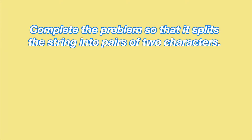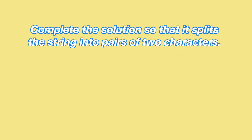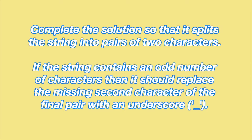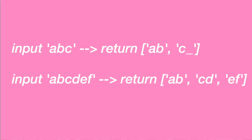Level eight is the lowest on this website, so level six is like two-step stuff. Complete the solution so that it splits the string into pairs of two characters. If the string contains an odd number of characters, then it should replace the missing second character of the final pair with an underscore. So for example, putting ABC as input gives you an array: first element AB, second element C underscore. I'll put the link to this kata in the description.